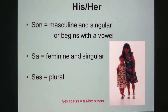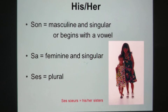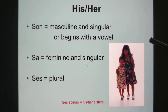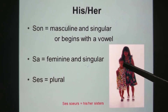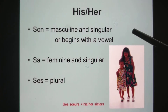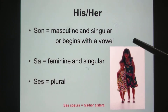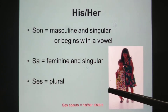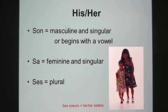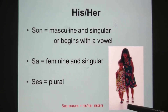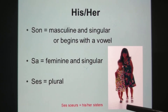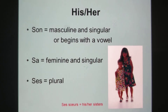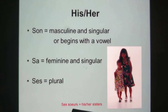For 'his' and 'her,' son is used for masculine singular nouns or nouns beginning with a vowel. Sa is for feminine singular nouns. Ses is for the plural. For example: sa mère, son image — image starts with a vowel. Example: 'ses sœurs' — it can be his sisters or her sisters. We are not looking at who owns it; we see that 'sisters' is plural, so we use ses.